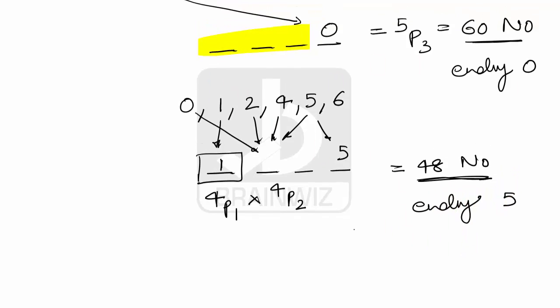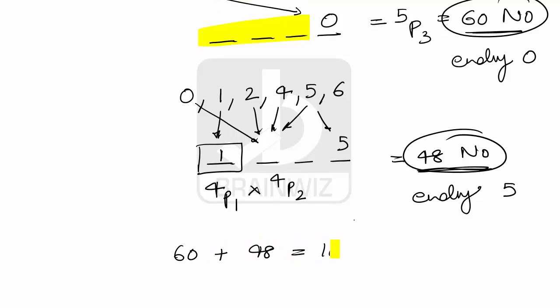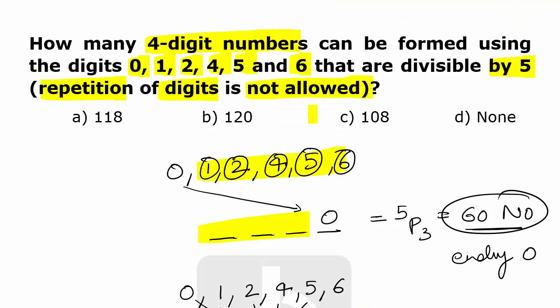So altogether 60 plus 48, which makes 108. So option C is the perfect answer. Thank you.